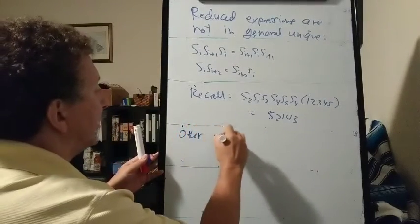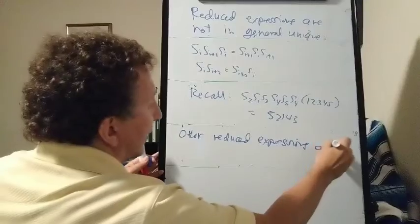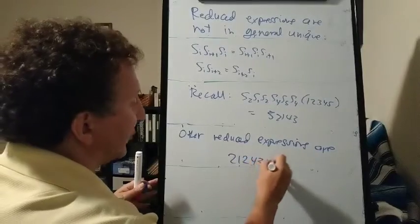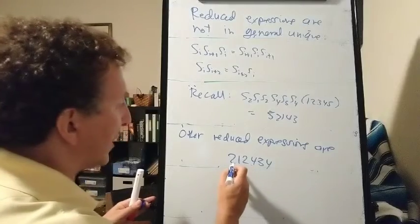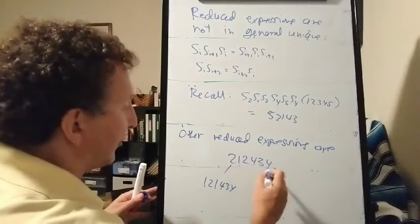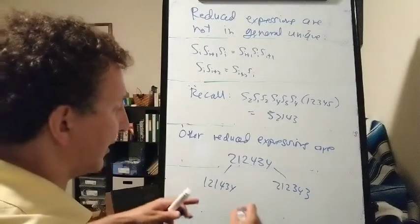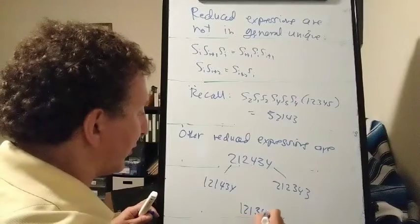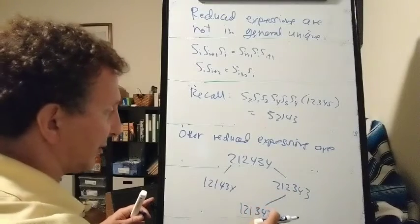So other reduced expressions are, let me just write this as 2, 1, 2, 4, 3, 4 to make the notation easier. So we could swap the 2, 1, 2 with a 1, 2, 1. And the 4, 3, 4 with a 3, 4, 3. And then we could do both. If we do both, we get 1, 2, 1, 3, 4, 3. And that is related to this one by a single swap. And that's related to this one by a single swap.